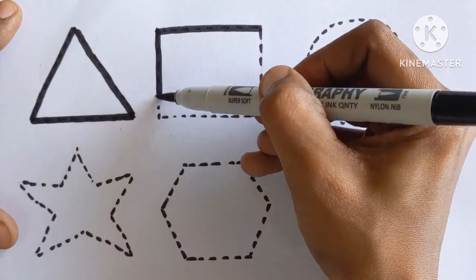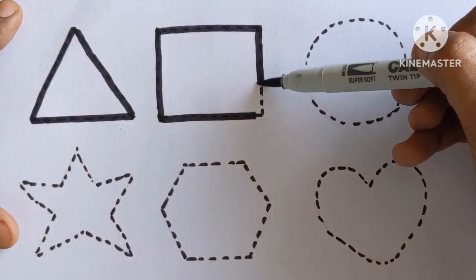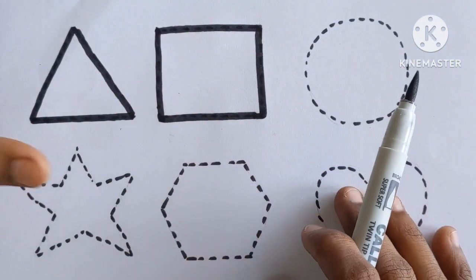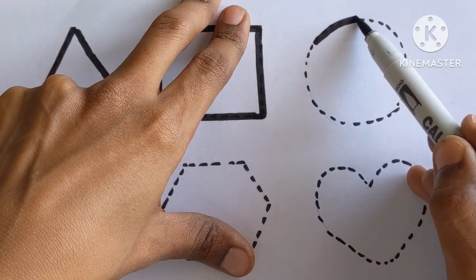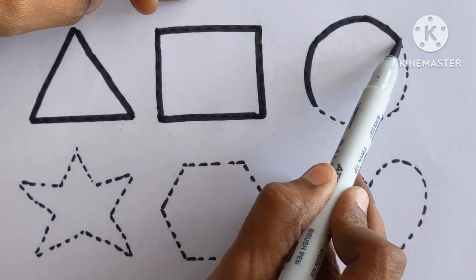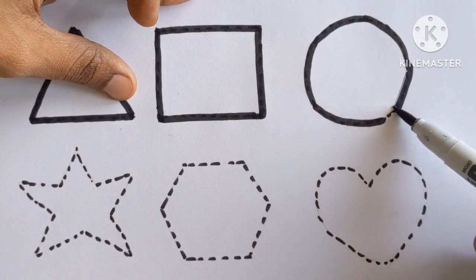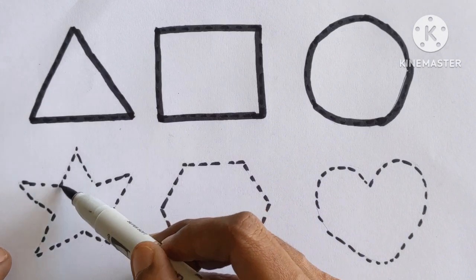Triangle. Square. Which shape is this, kids? This is a square. Circle.